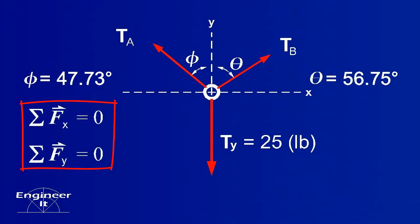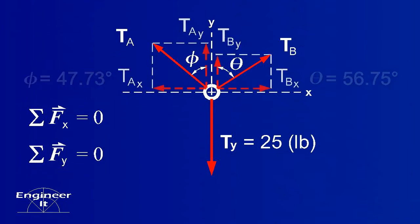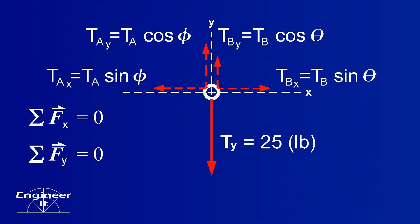Then use the equilibrium equations to solve for the tensions. First, break the tension forces down to x and y components. Remember that components replace the tension forces without changing the system. It makes it easier to sum the forces in the x and y directions. Keep track of directions by including negative signs because the sum of the forces must equal zero.